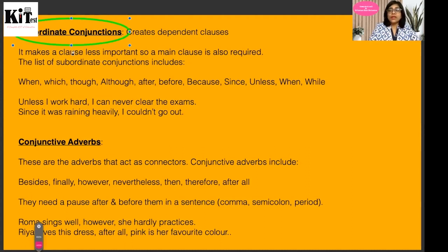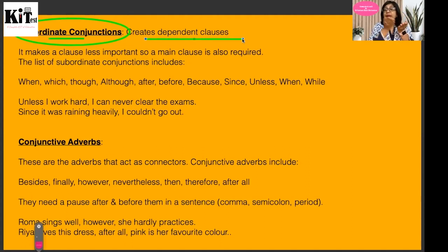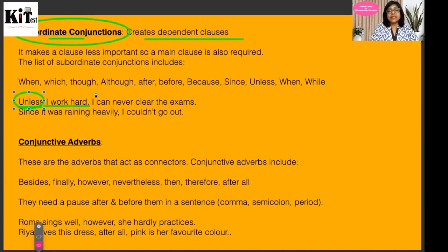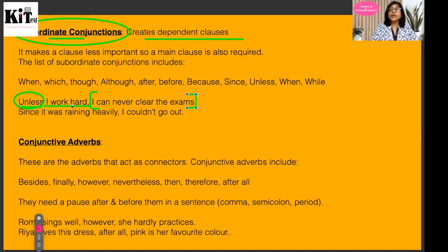The third and most important type is subordinating conjunctions. What are subordinating conjunctions? These are words or connectors that create dependent clauses. Their use creates dependency in sentences — one clause becomes less important and depends on another clause for meaning. For example: 'Unless I work hard' — this is an incomplete thought. To complete it you need another main clause: 'I can never clear the exams.' To get a complete meaning, you need another main clause. This is the idea of subordinating conjunctions.